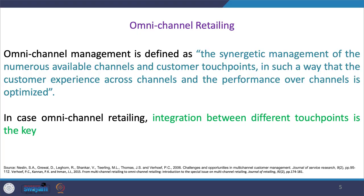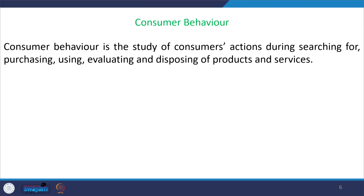What you need to understand is that omni-channel retailing is all about the integration that happens between different touch points. Another thing to discuss as part of the retail management decision process is consumer behavior — the study of consumer actions with respect to how they search for product information in the pre-purchase stage, how they purchase products, what channels they prefer, and the various motives that lead consumers to use either an online or offline channel.